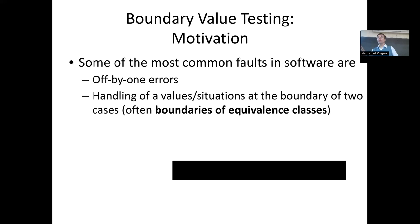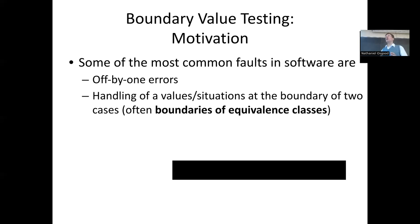Why do boundaries produce so many errors? Almost by definition, boundaries give us the edge cases — things that someone could be excused for thinking should be handled one way, when really, it's understandable because it's right at the edge, but it should be handled the other way.